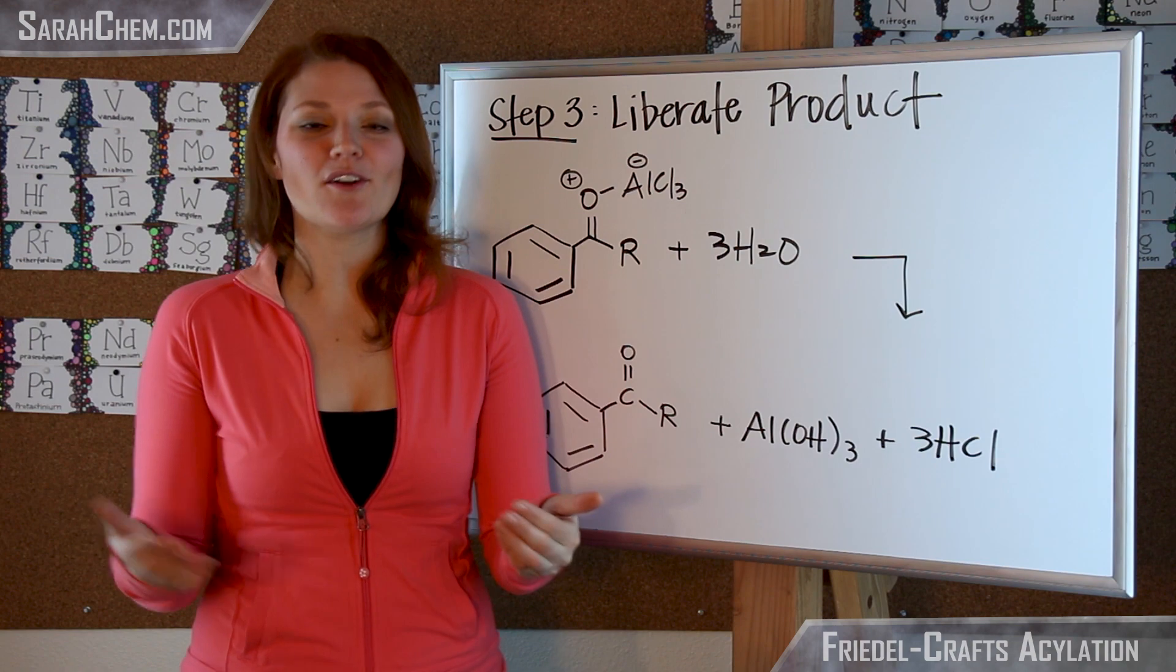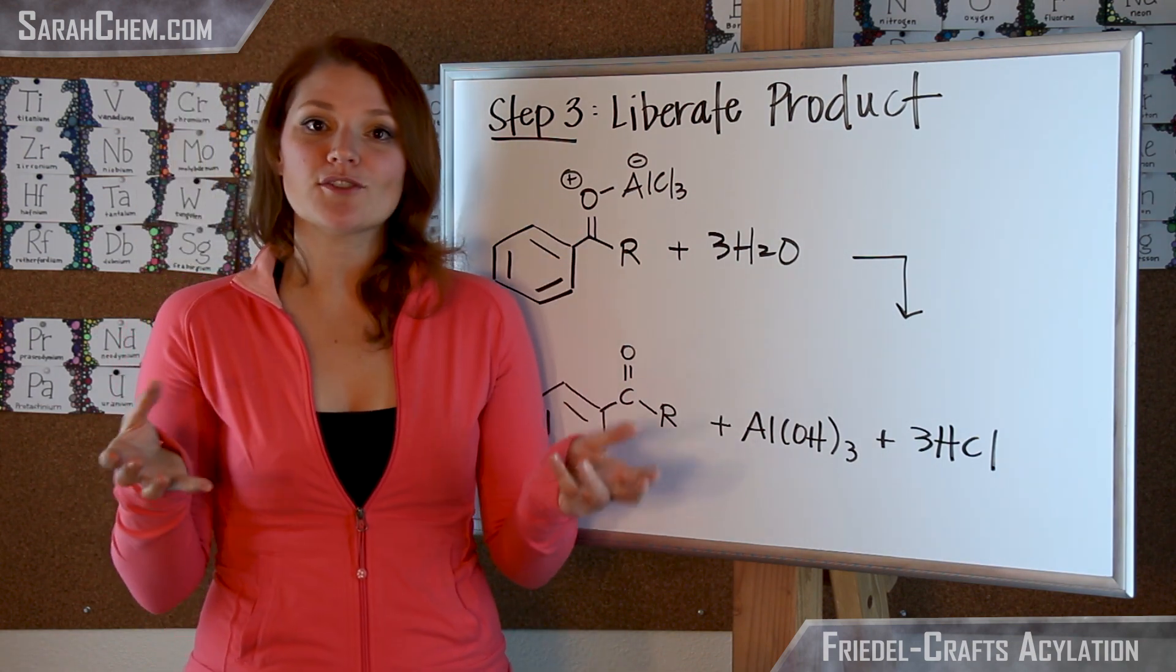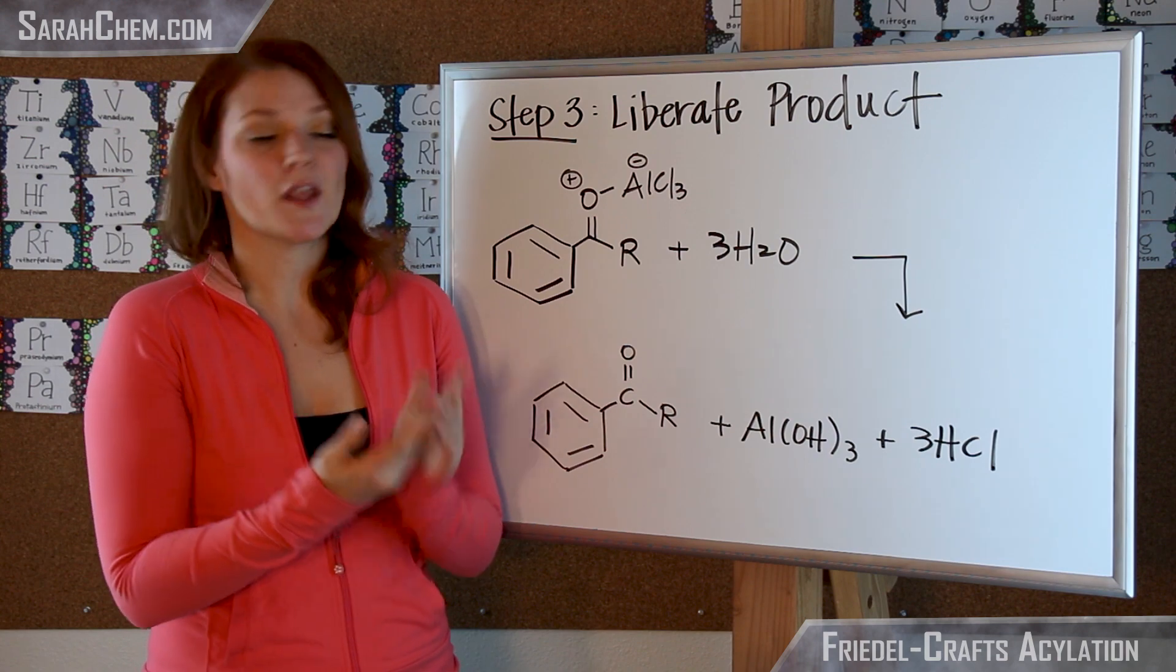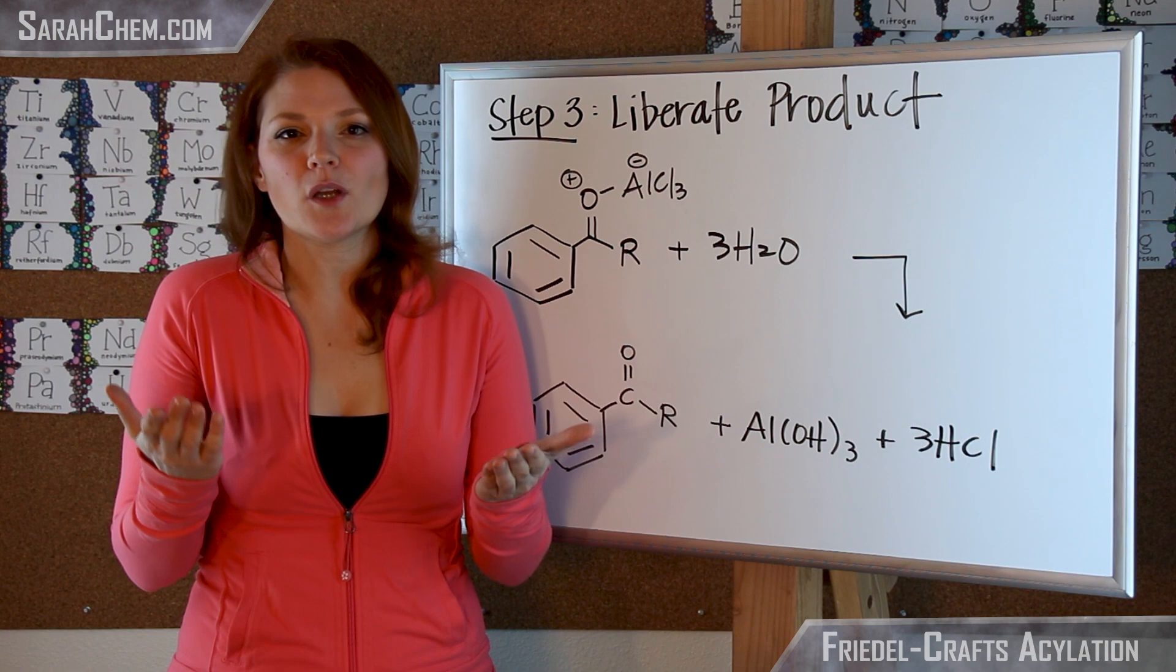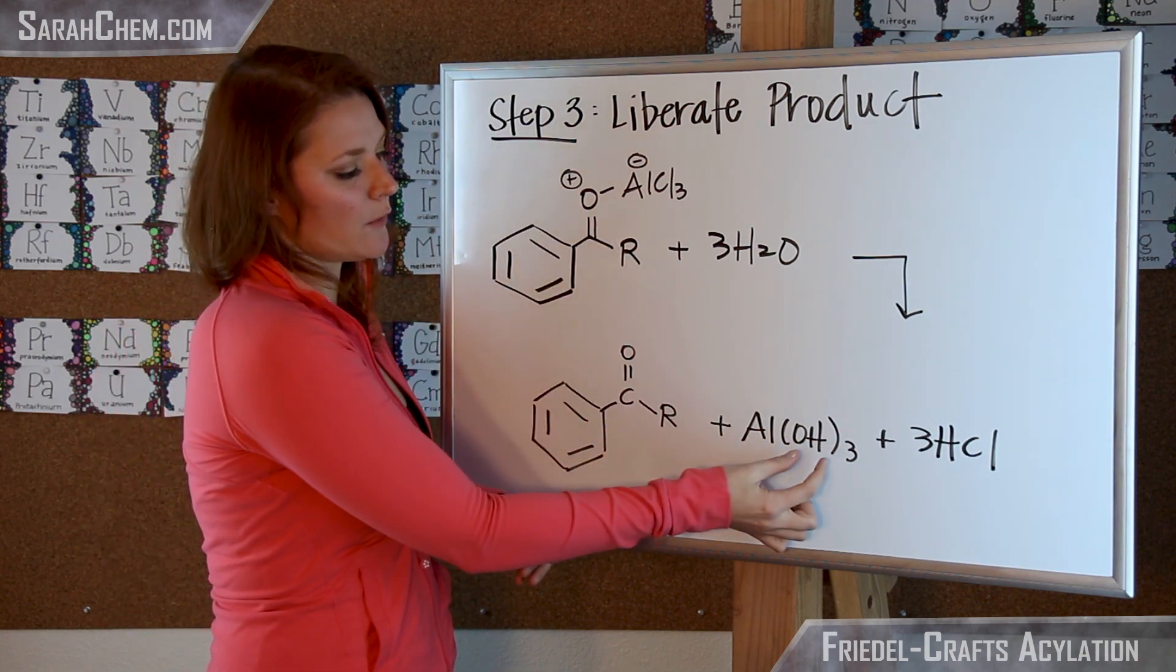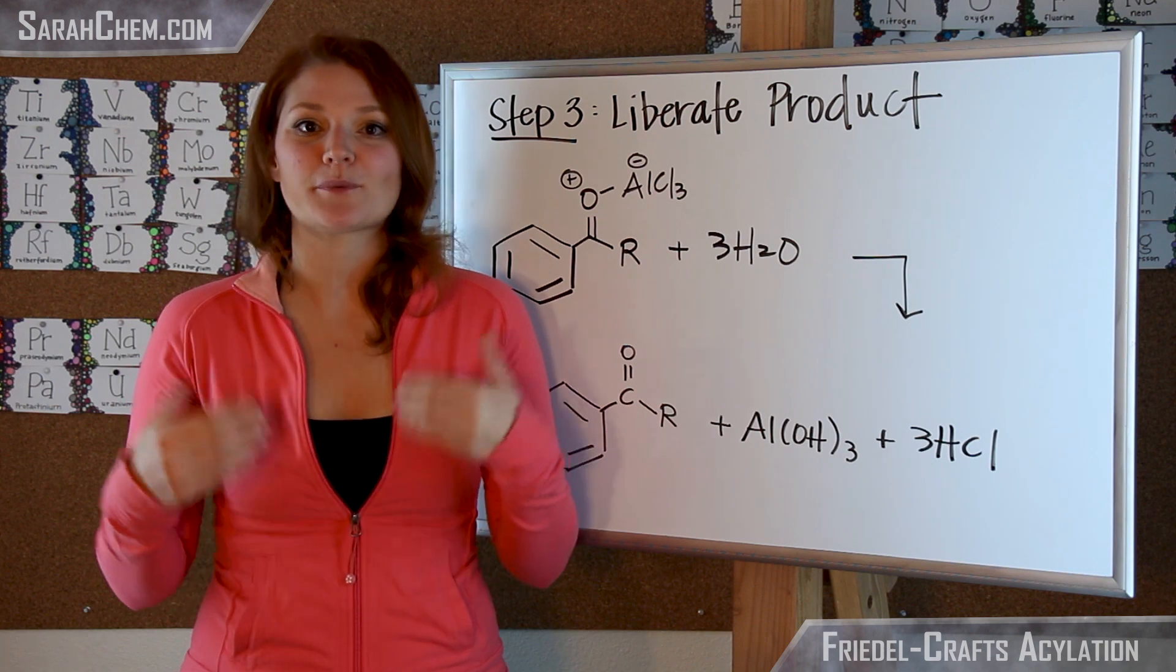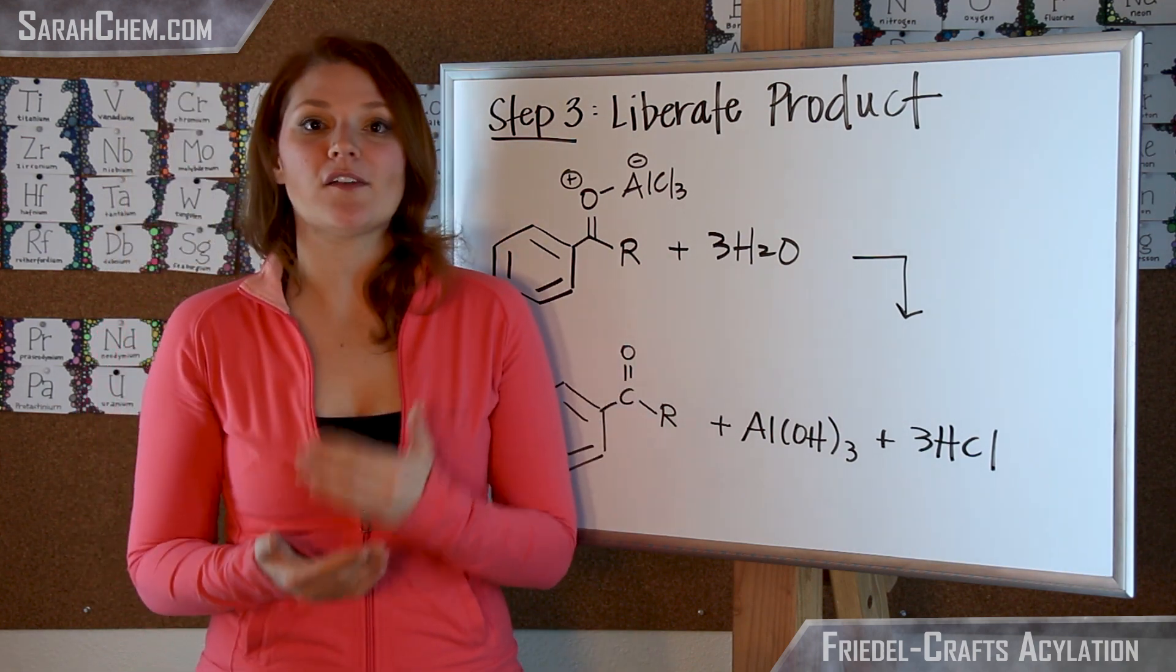So now our final goal is to liberate our acylated benzene product from this complex that's formed. So the way you do that is you take the reaction mixture, typically, and you're going to pour it into ice-cold water, and that will get your product out. What happens is that three equivalents of water are required in order to get this off. Now the three equivalents are easy to understand if you think about the fact you want to make aluminum hydroxide, which requires three equivalents of hydroxide, and you also have three chloride groups, so you'd need to be able to make three HCl groups out. So now this is pretty much what you need to know in order to understand the Friedel-Crafts acylation.